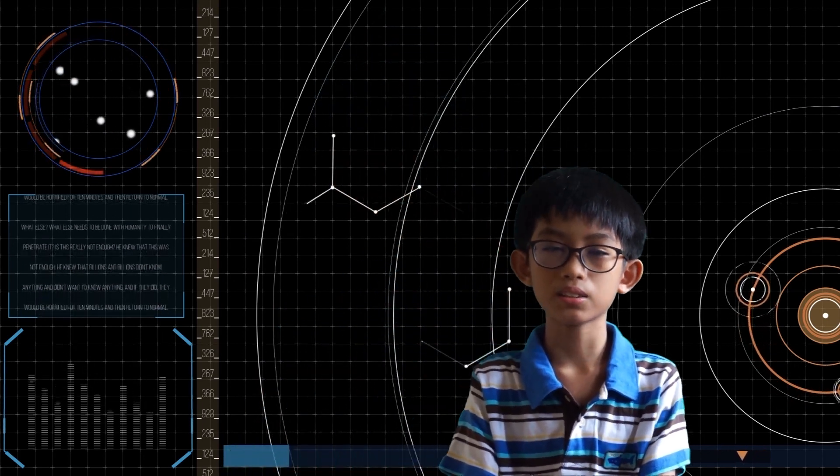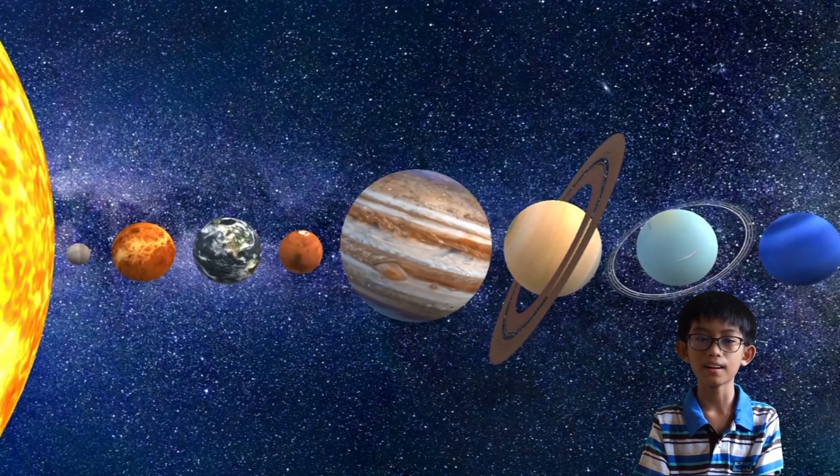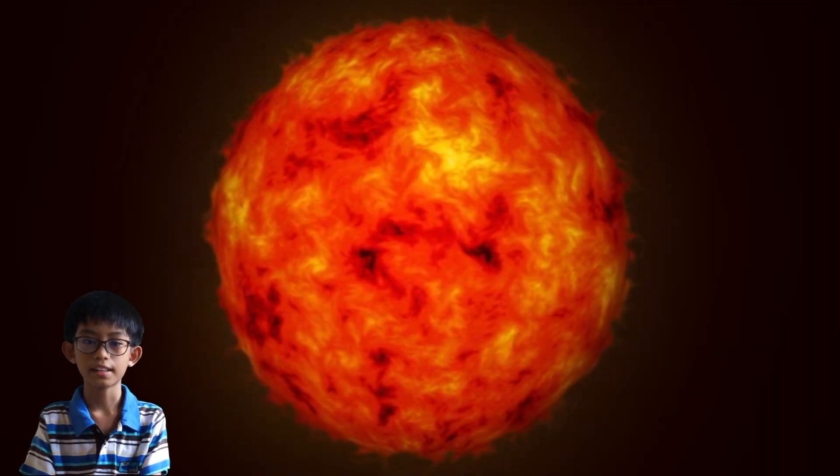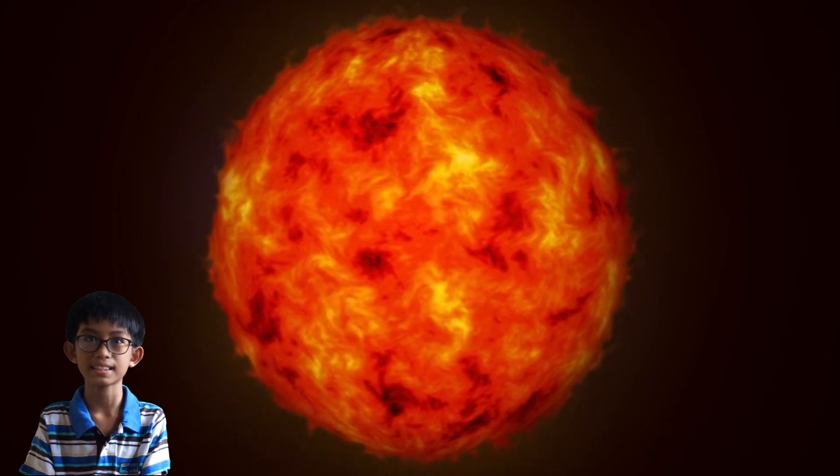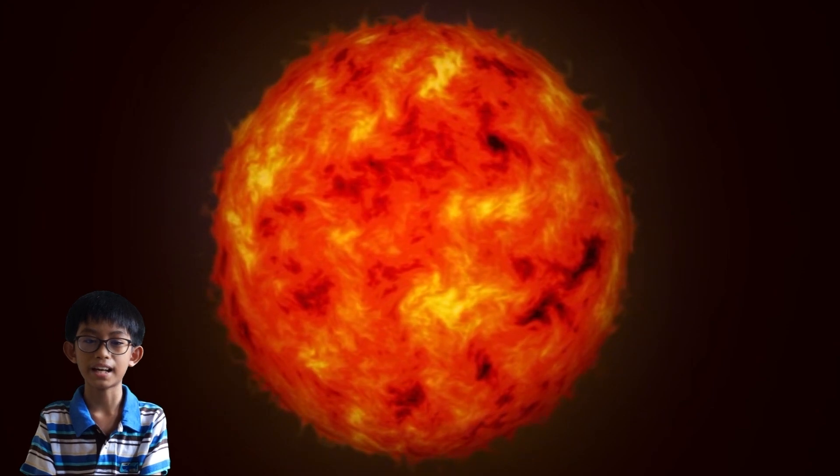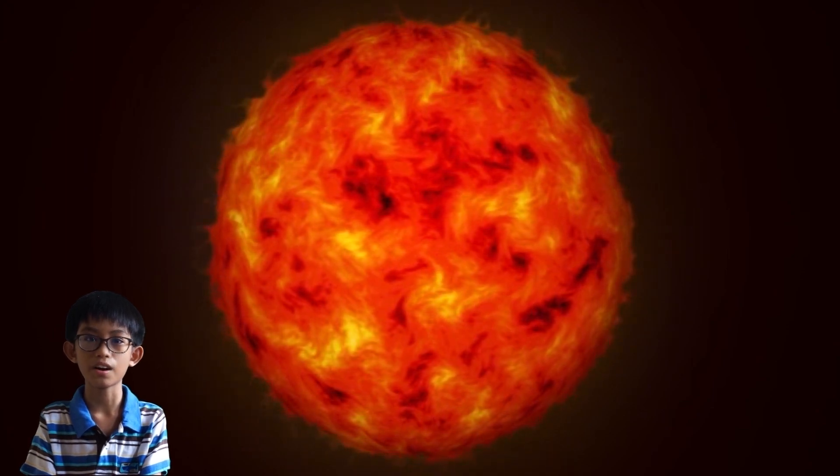Today, we're going to talk about the Solar System. The Solar System is the Sun and all the things orbiting around it. The Sun is a huge, hot, and bright ball of gas. It is what pulls all the planets and other things around it.